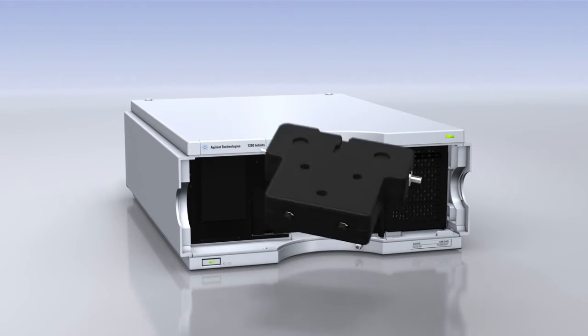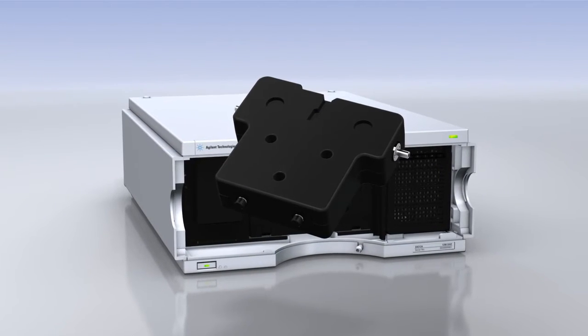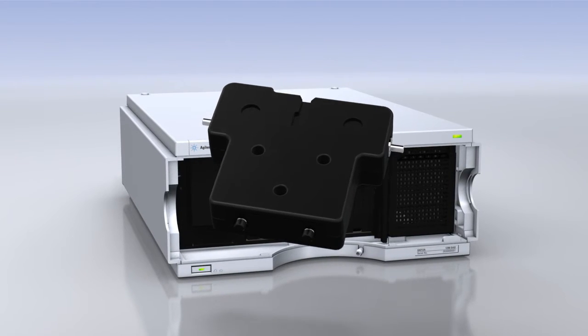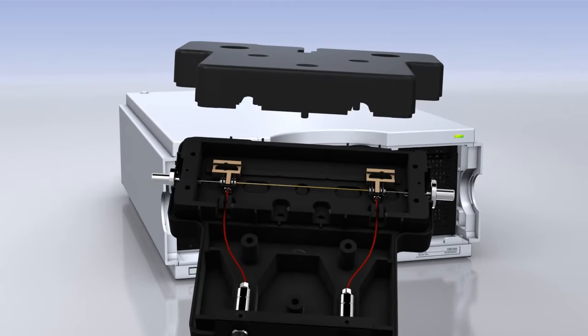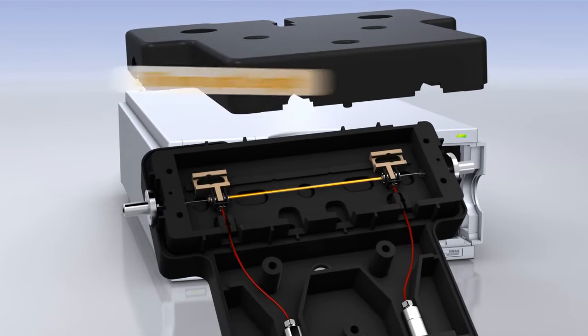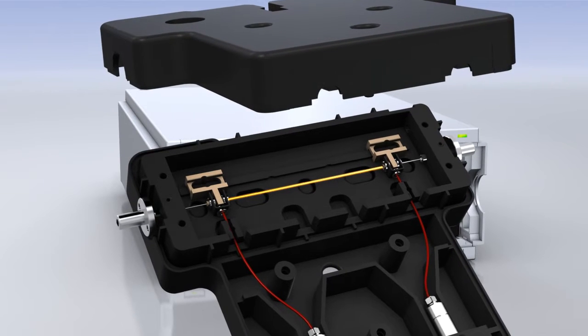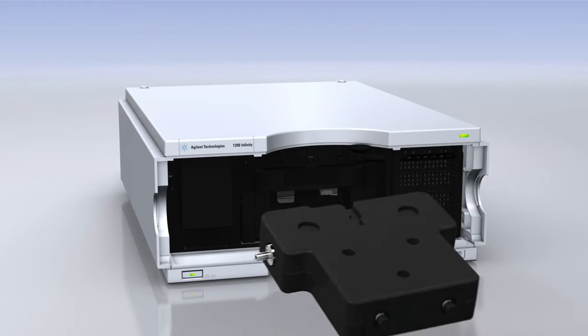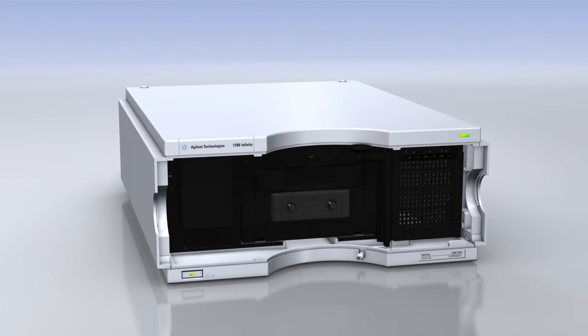The 1290 and 1260 Infinity DADs feature a completely new optical design based on Agilent's MaxLite flow cell with opto-fluidic waveguides. With a path length of 60 mm, this revolutionary flow cell achieves typical noise levels less than ±0.6 micro-absorbance units per centimeter for a new dimension in UV sensitivity.